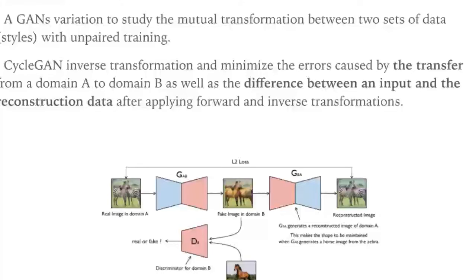We note that the generative models in CycleGAN learn the set-to-set level of transformation, while the original GAN learns to generate data to fit in a target set. In the task of art style transfer, CycleGAN can learn the mutual conversion between normal photos and an art style, as well as more general transformations between two sets of data.